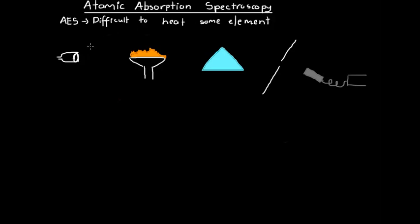A scientist named Alan Walsh, an Australian, decided that rather than using heat to excite the metal as in atomic emission spectroscopy, he had the brainwave to use light instead. We know that an atom can be excited by heat or light, and if it's going to be excited by light, it can only be excited by a photon that has exactly the right amount of energy.